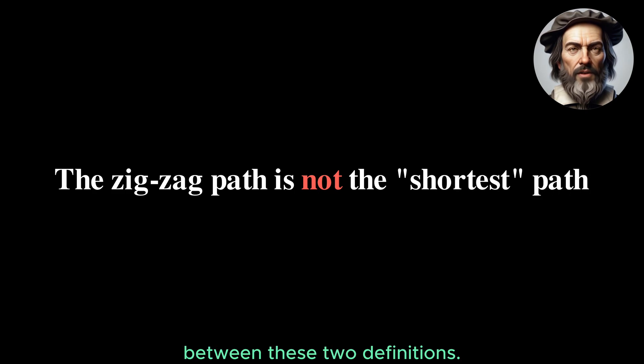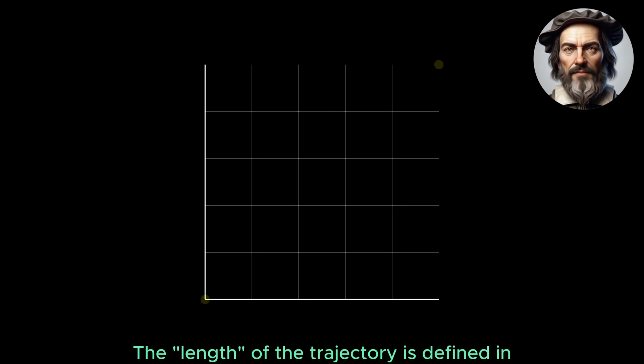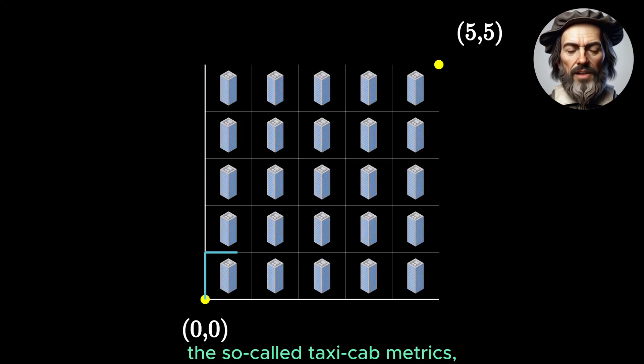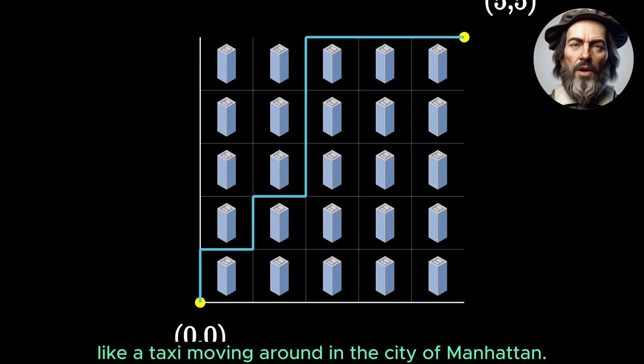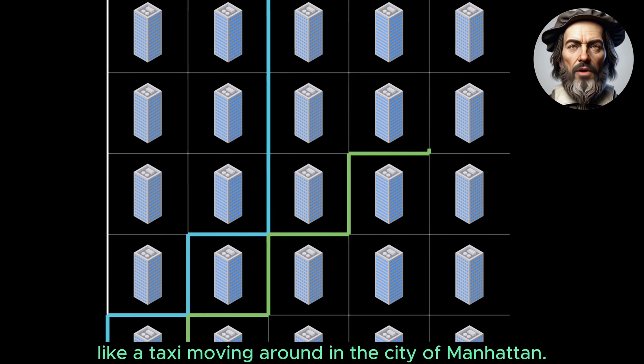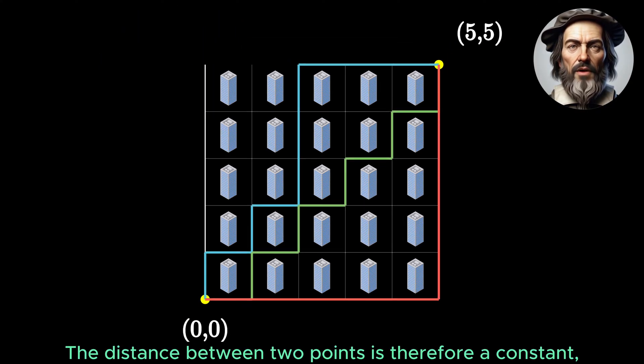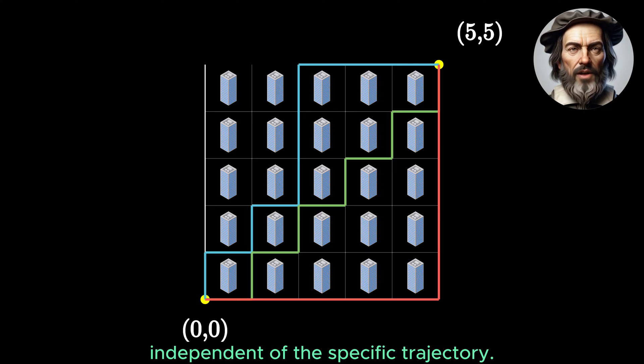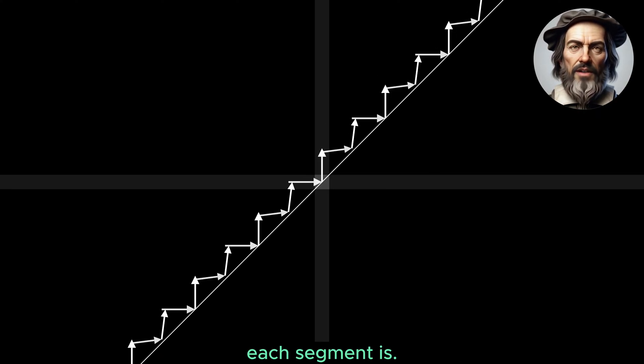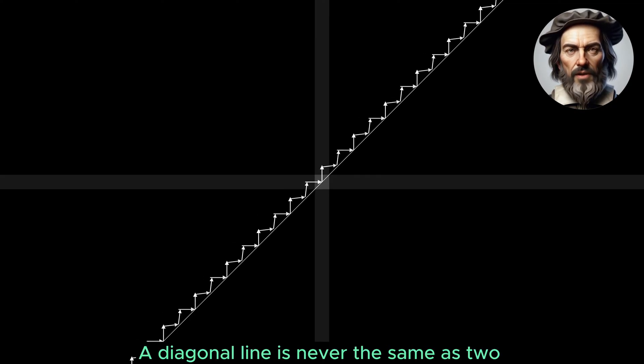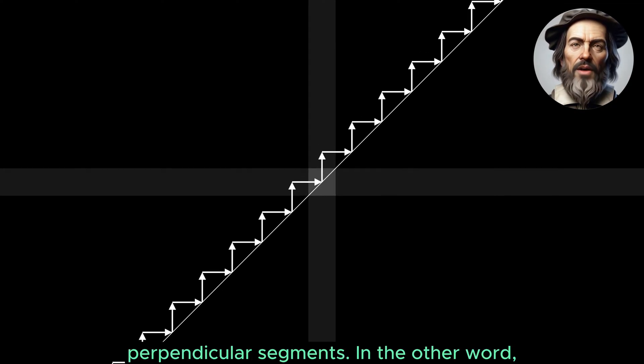There is a fundamental difference between these two definitions. The length of the trajectory is defined in the so-called taxicab metric, like a taxi moving around in the city of Manhattan. The distance between two points is therefore a constant, independent of the specific trajectory. This remains true no matter how small each segment is. A diagonal line is never the same as two perpendicular segments.